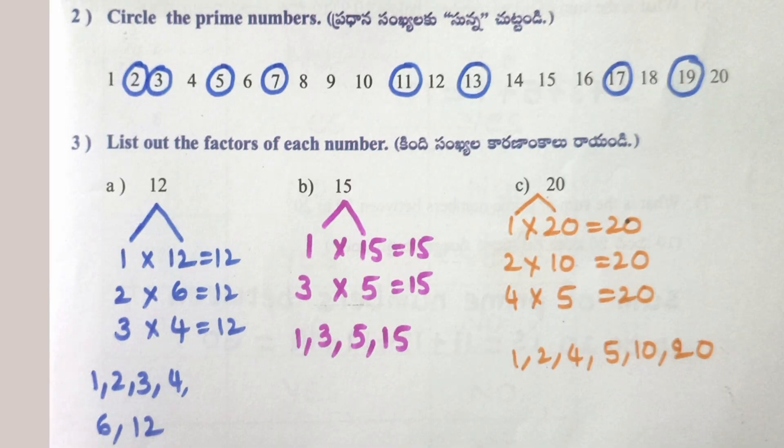Circle the prime numbers: 2, 3, 5, 7, 11, 13, 17, 19.